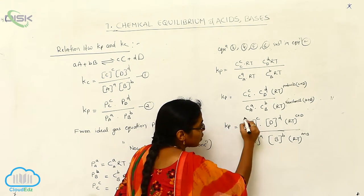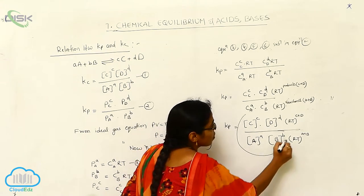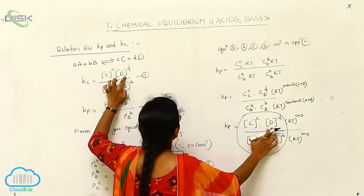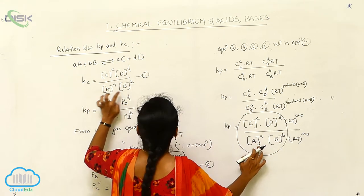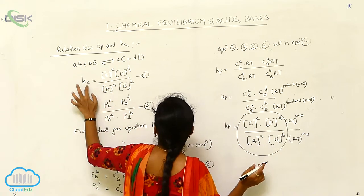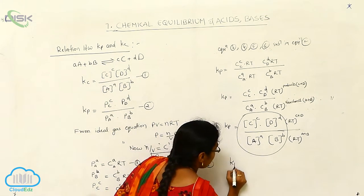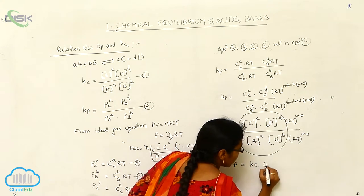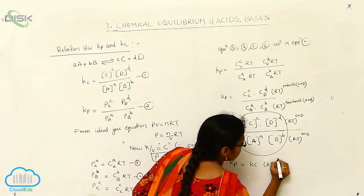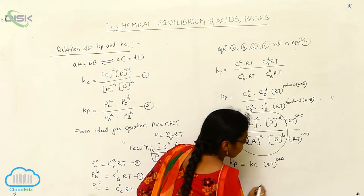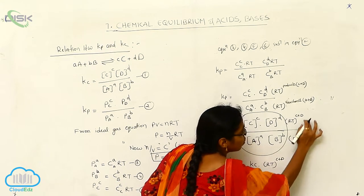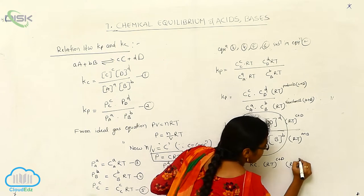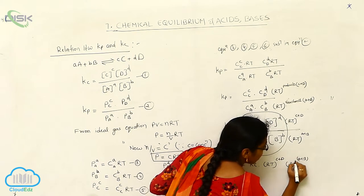Now I want to take the R·T terms to the top. In this place, you substitute [C]^c · [D]^d divided by [A]^a · [B]^b, which is nothing but Kc. So Kp is equal to Kc multiplied by R·T to the power of C plus D, and when R·T to the power of A plus B goes to the other side, you can write minus.